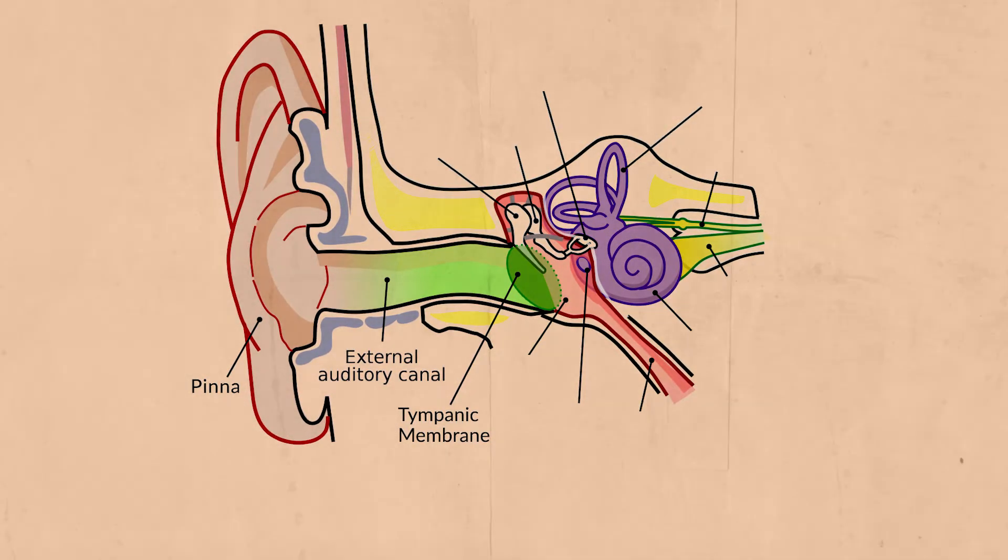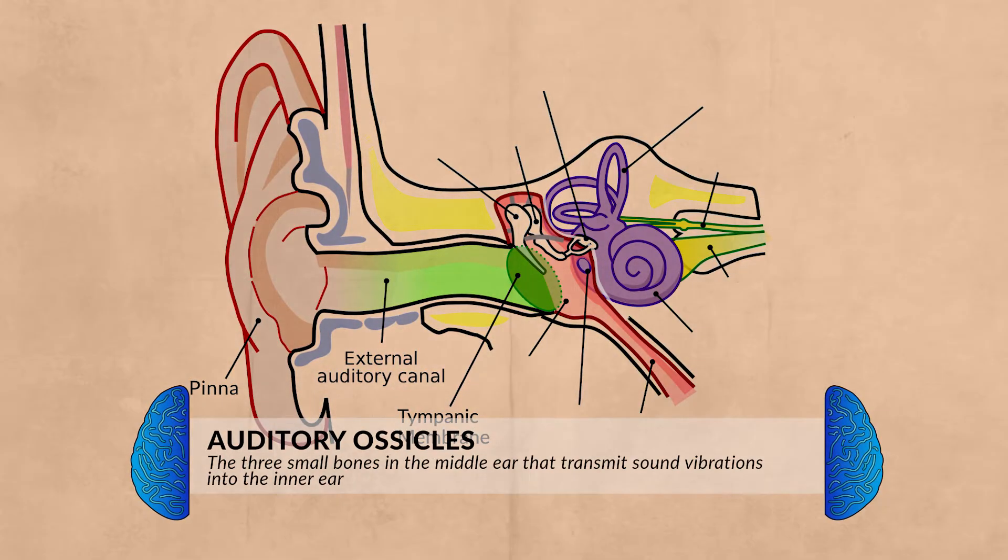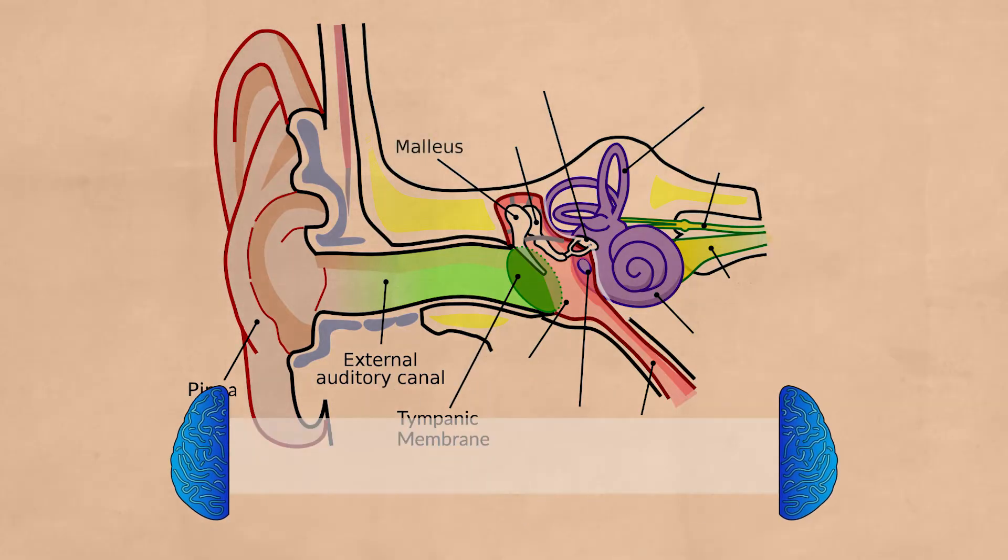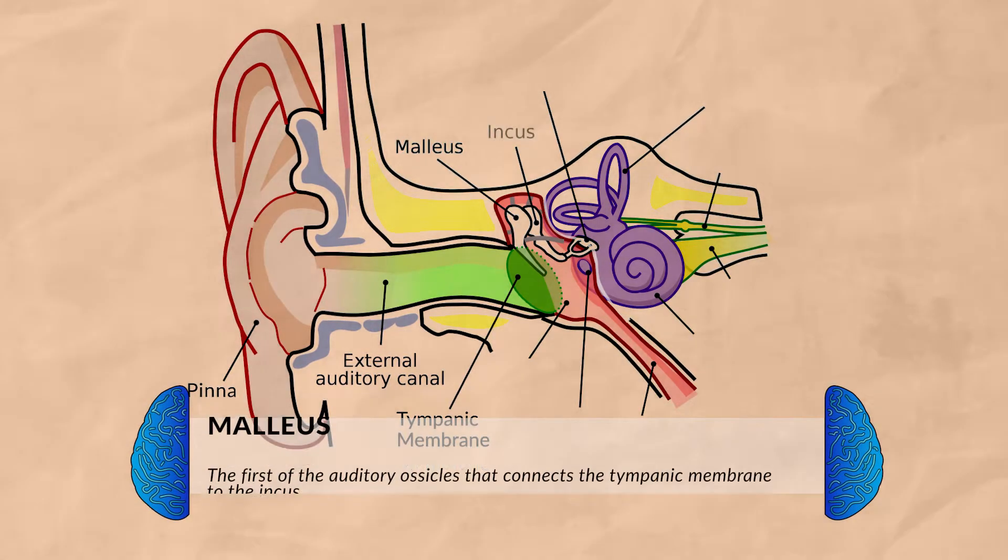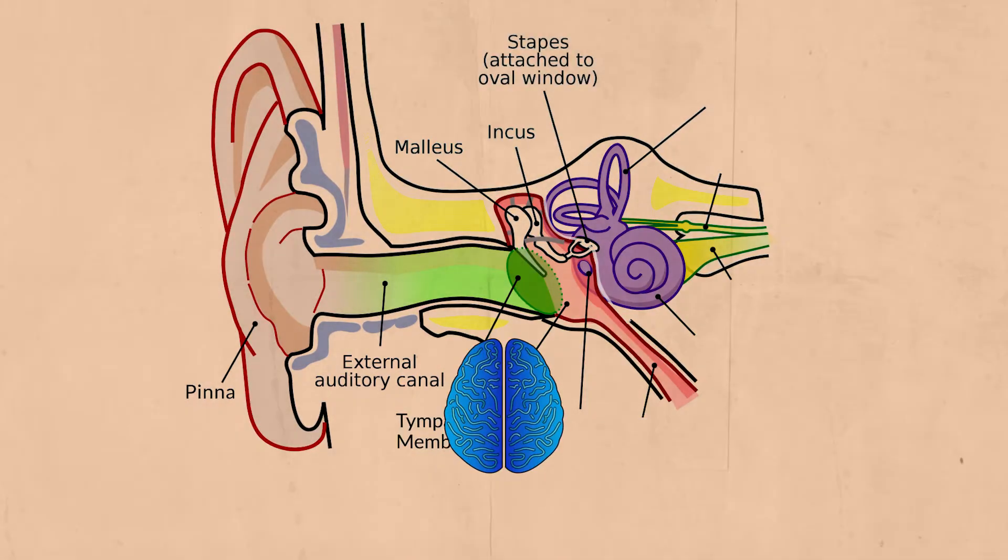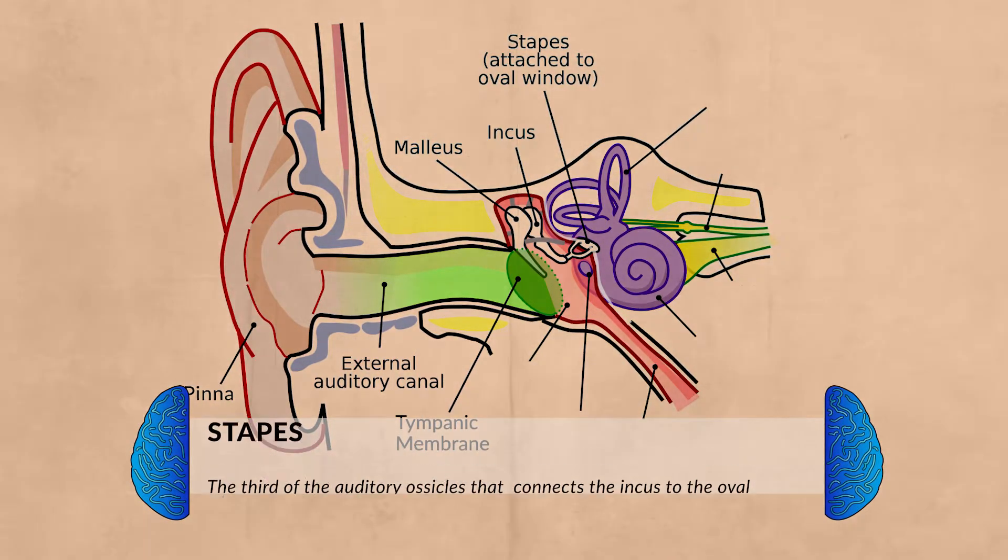After the eardrum, we move into the middle ear. This part of the ear is made up of three tiny bones, called the auditory ossicles. Moving from the eardrum to the first bone, we have the malleus, also called the hammer, due to the bone's shape. Then we have the incus, also known as the anvil, and lastly the stapes, which is also known as the stirrup. All these bones help amplify sound that's sent from the eardrum to the inner ear.